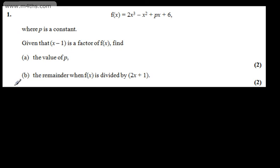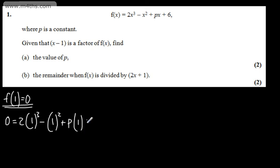If we've got (x - 1) as a factor, we can say in part (a) that f(1) = 0. I'm going to use this property. So 0 = 2(1)³ - (1)² + p(1) + 6. That gives me 0 = 2 - 1 + p + 6, and we can see from this that p = -7. So that's the first part done.